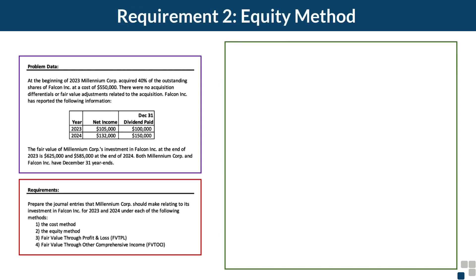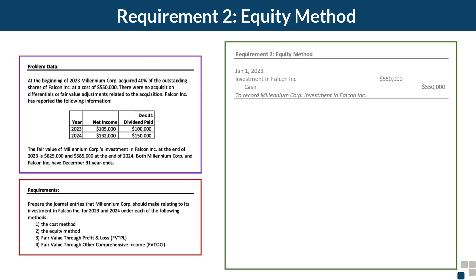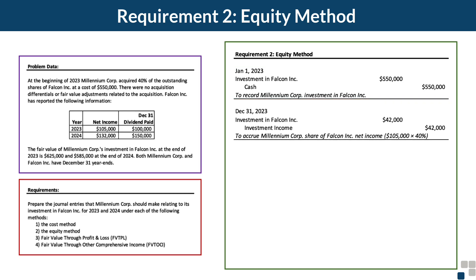Now let's move to requirement 2 under the equity method. Again on January 1st, the journal entry is the same as under the cost method to record the acquisition — debit investment in Falcon and credit cash for $550,000. Under the equity method, the next entry on December 31st accrues Millennium Corporation's share of Falcon's net income. With net income of $105,000, Millennium recognizes 40%, or $42,000, as investment income. The journal entry is a debit to the investment in Falcon account and a credit to investment income for $42,000.